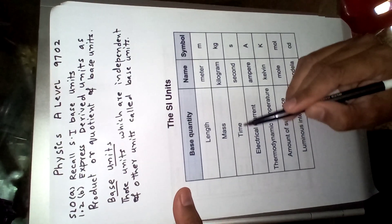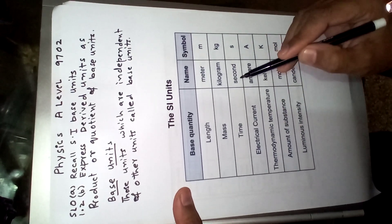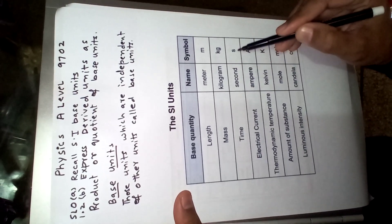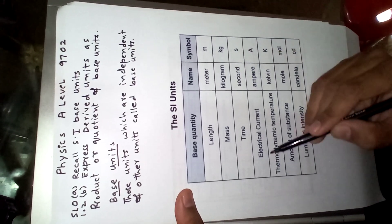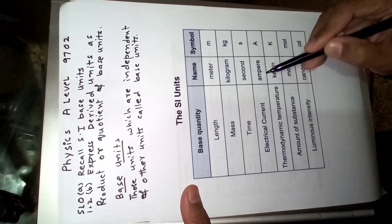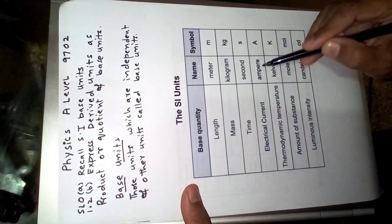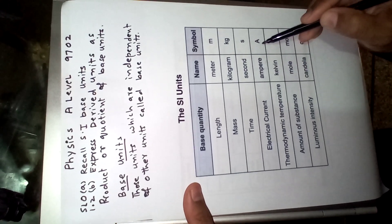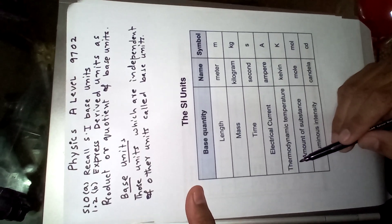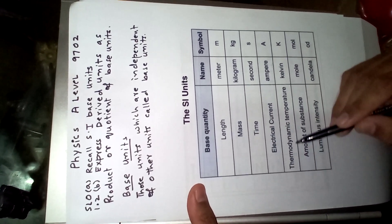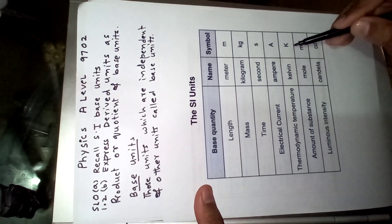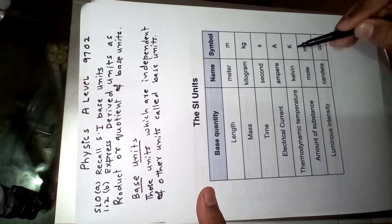The third base quantity is time, with base unit second and symbolic representation s. The fourth base quantity is electric current, with SI base unit ampere and symbolic representation capital A. The fifth base quantity is thermodynamic temperature, with base unit Kelvin and symbolic representation capital K.